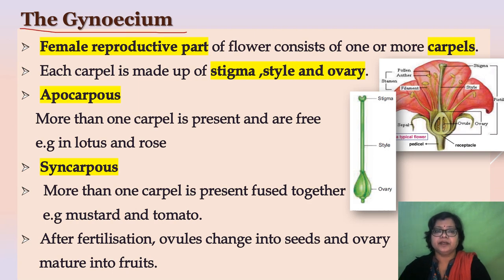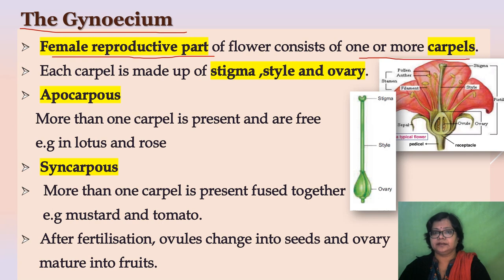Gynoecium is the female reproductive whorl of the flower and it is the innermost whorl. It consists of one or more carpels. The carpels are also known as pistil. Each carpel is made up of stigma, style, and the ovary. The ovary is present at the base, within which ovules are present, then the long elongated structure — the style — and the sticky stigma which receives pollen grains.